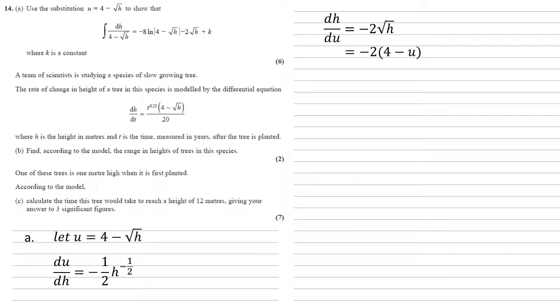If we replace our root h, we know that u equals 4 minus root h, so root h must be 4 minus u. So we've got that dh by du equals minus 2 lots of 4 minus u.